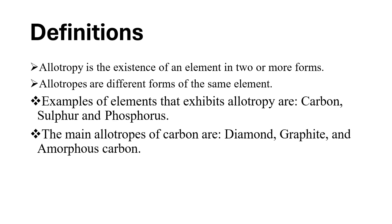We have examples of elements that have different allotropes. We have, for example, carbon, we have sulfur, we have phosphorus, and also we have another element like oxygen.